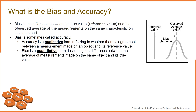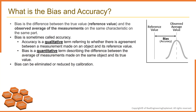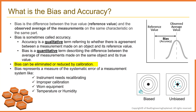Bias is a quantitative term describing the difference between the average of measurements made on the same object and its true value. Bias can be eliminated or reduced by calibration. However, errors that contribute to bias can be present even where all equipment is properly calibrated and under control. Temperature probably has the most potential for introducing this type of bias — for example, a constant heat source will introduce serious errors in dimensional measurement of metal objects.